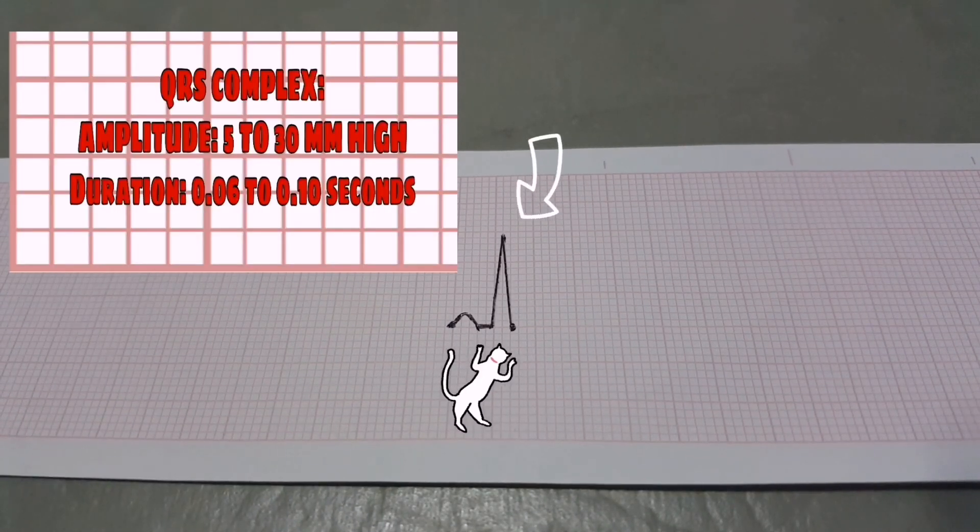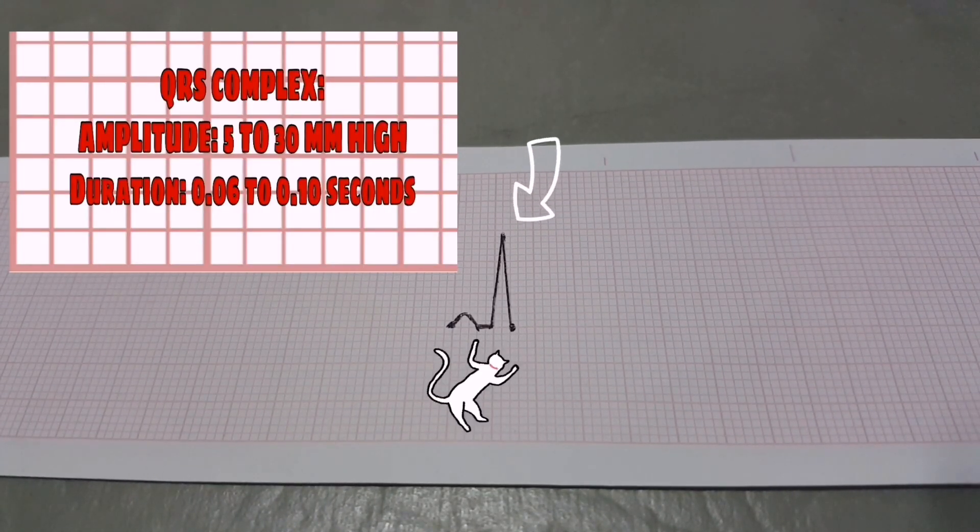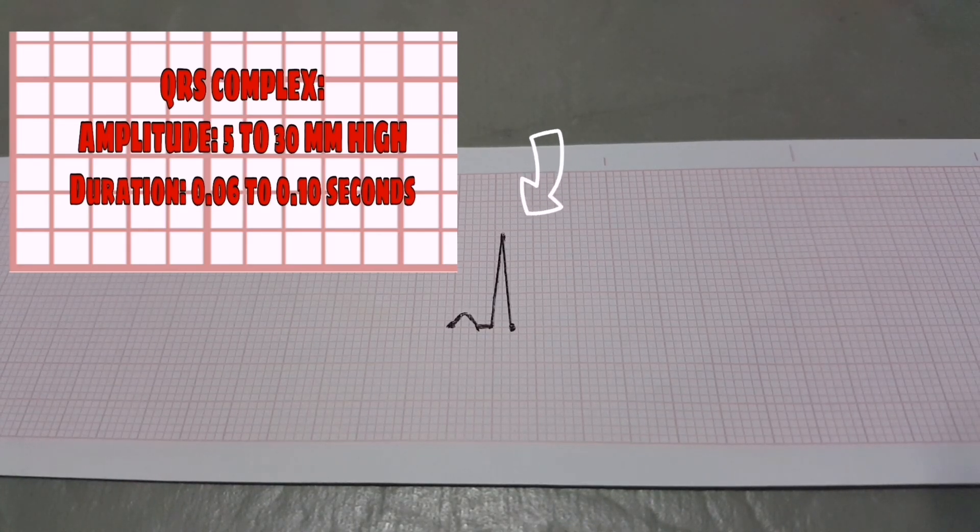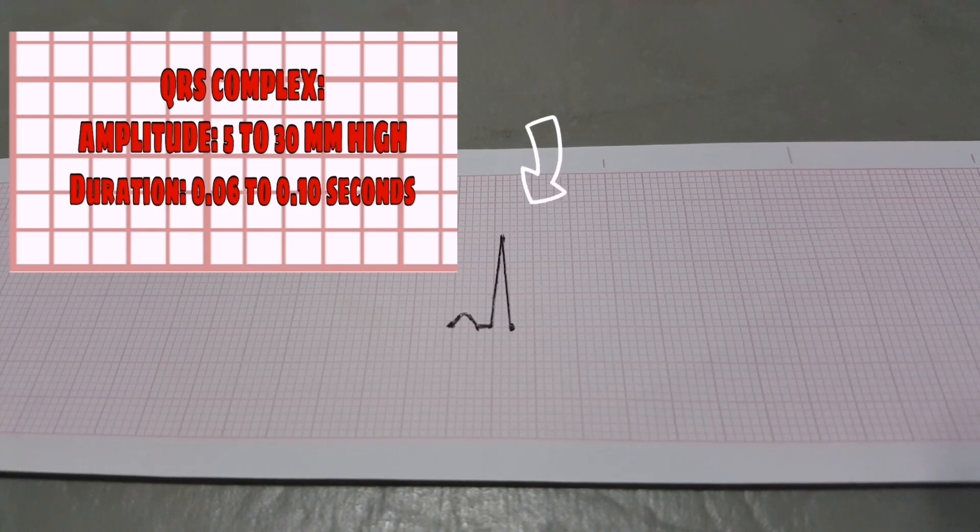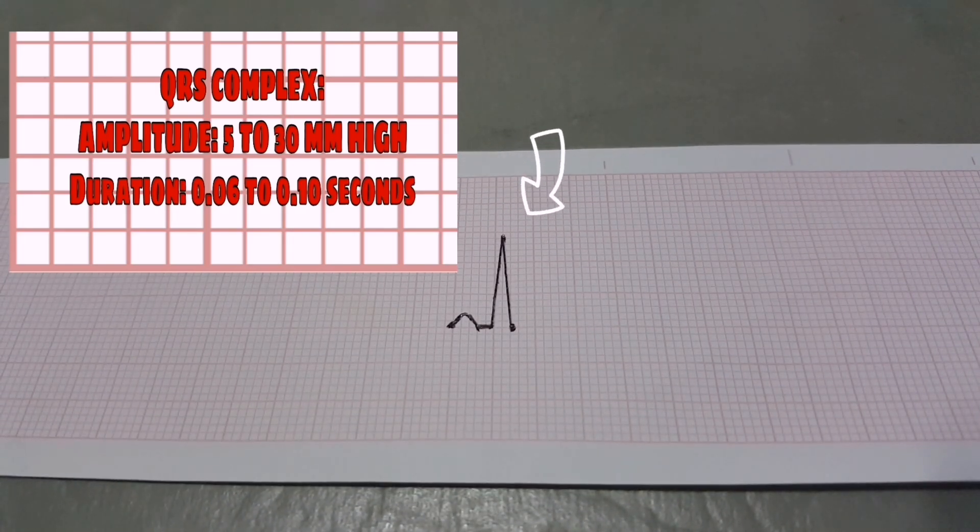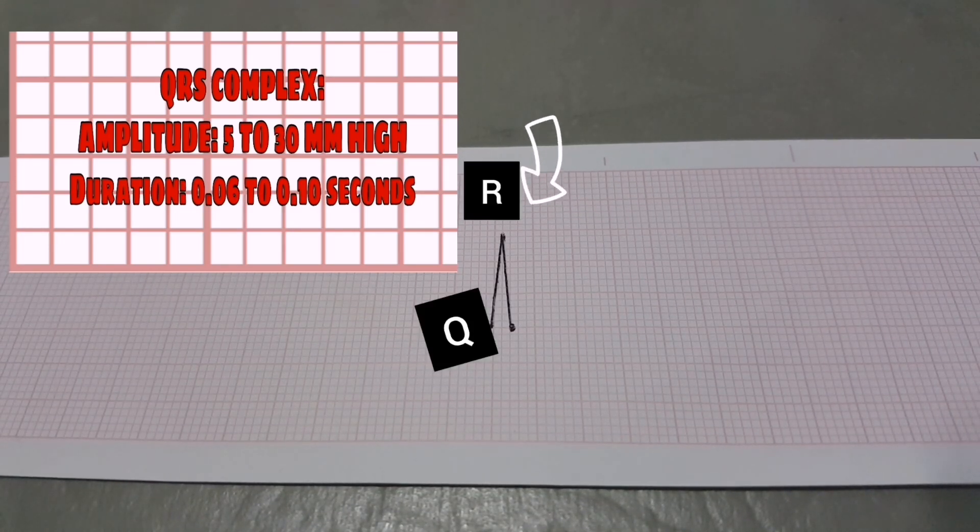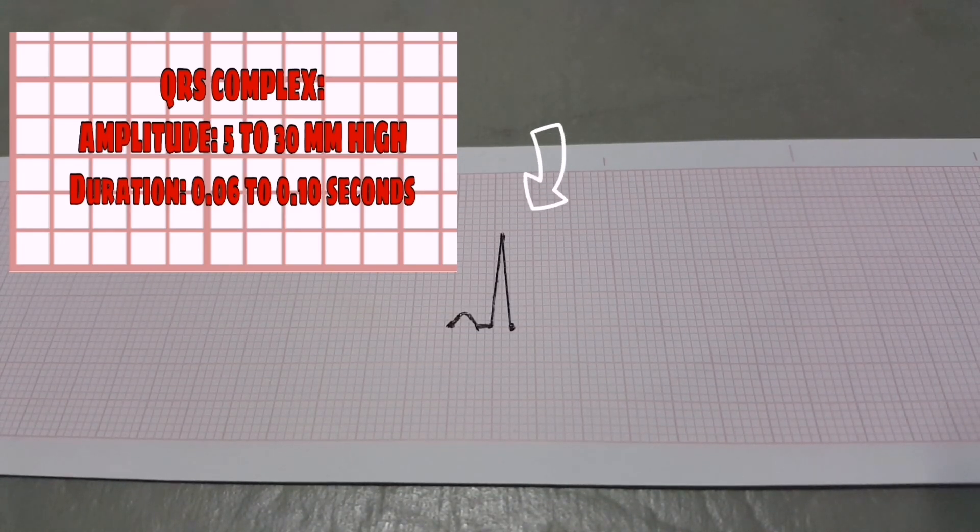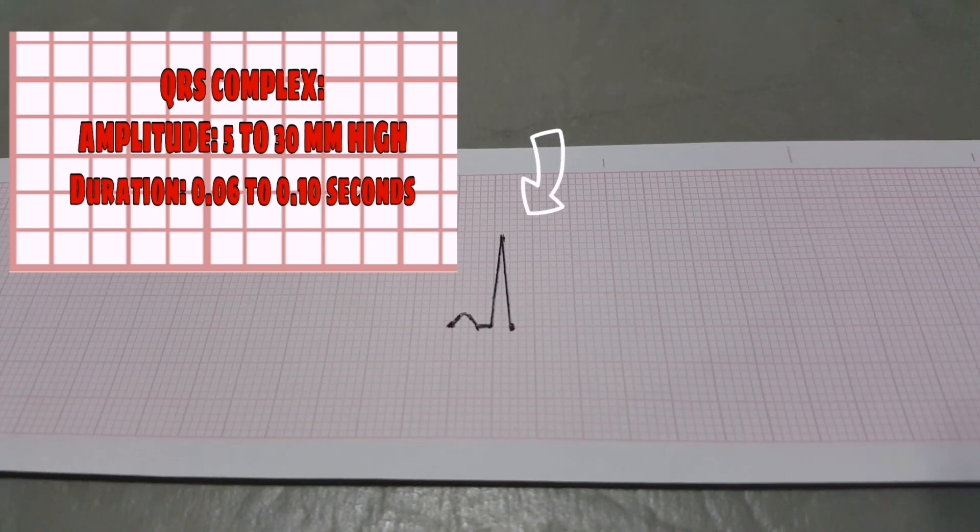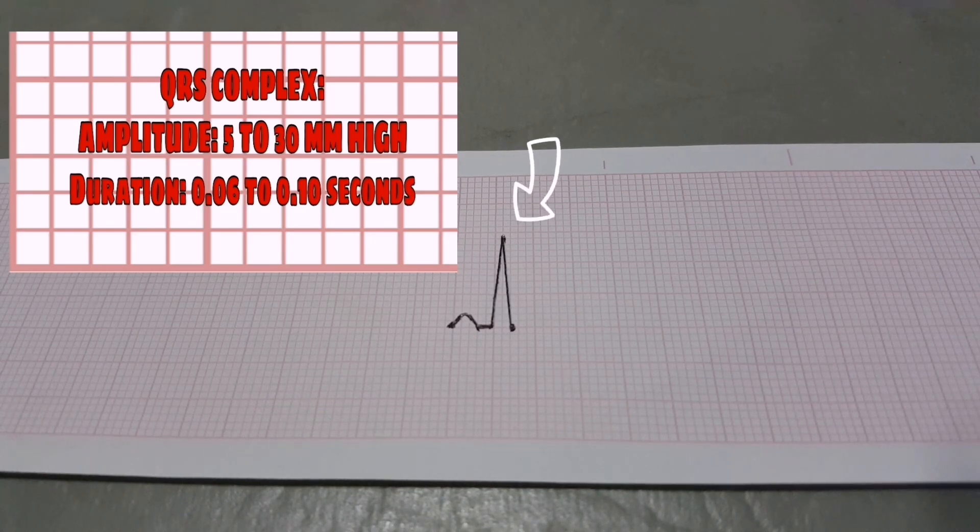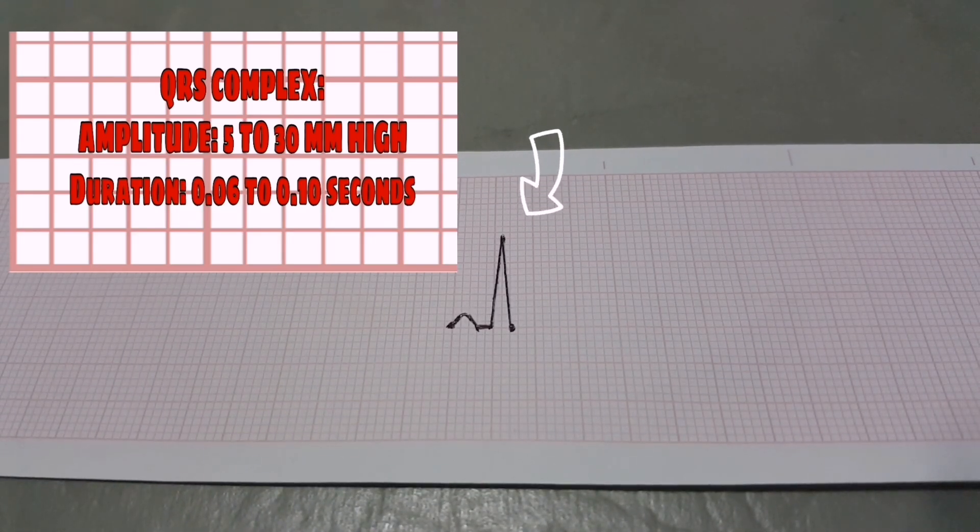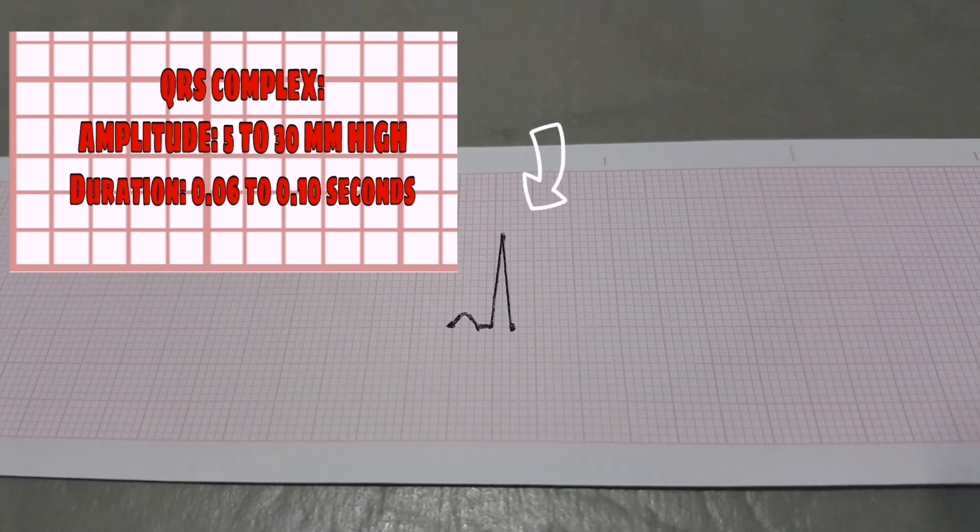The QRS complex represents ventricular depolarization. It follows PR interval, amplitude 5 to 30 millimeter high. Duration, 0.06 to 0.10 seconds. Configuration, there is a Q-wave, an R-wave, and an S-wave. Deflection, it is positive and or upright in leads 1, 2, 3, AVF, AVL, and V4 to V6, and negative in V1 to V3.